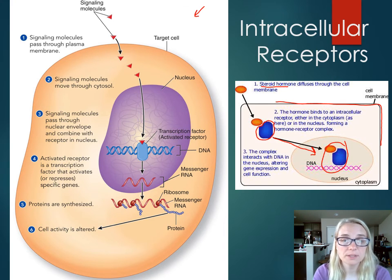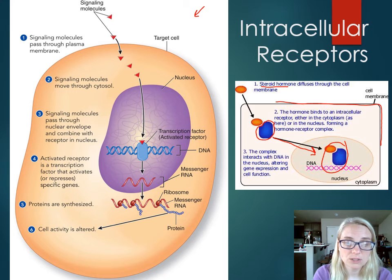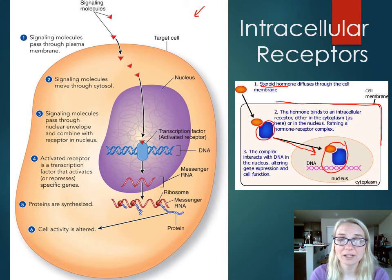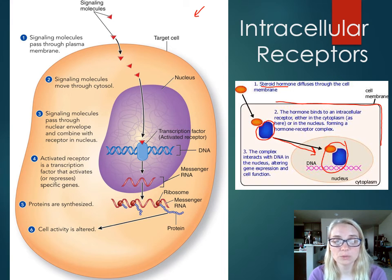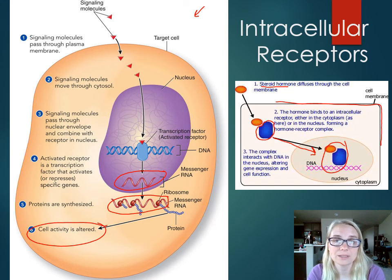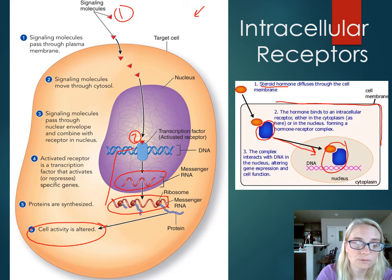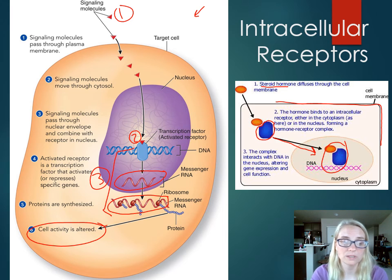In a more detailed picture: lipid-soluble molecules like testosterone, estrogen, and progesterone diffuse through the plasma membrane. In this case, the receptor is already in the nucleus, already loaded onto the DNA like a transcription factor — we talked about those back in chapter 13. Once the hormone or signaling molecule binds to the receptor/activation factor, it triggers transcription, which produces mRNA. The mRNA is translated, and the protein product alters the cell's activity. This whole process of transcription and translation is the transduction pathway — step three. Cell activity altered is step four.